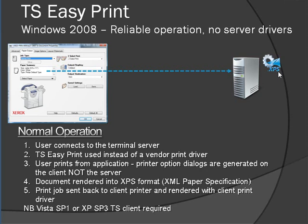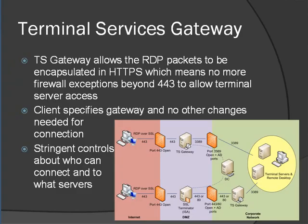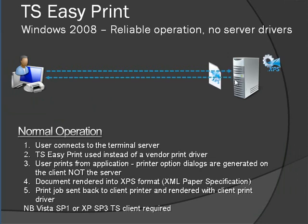Instead of trying to create a data packet for the user's local printer, it just creates this generic XPS document. If the user wants to access the printer properties, TS Easy Print just tells the user's local machine to show the printer properties dialog locally. When they want to print, the XPS document is sent over the RDP connection and locally rendered using the user's local print driver, then prints in the correct format.